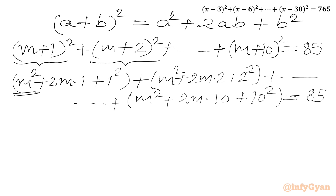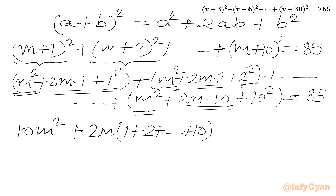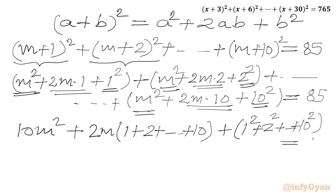Now I will collect m² terms — there are 10 m² terms in the LHS, so I will write 10m². Then the middle terms: I will take 2m in common, so in the bracket it will be 1 + 2 + 3 up to 10. Then the constant terms: 1² + 2² up to 10² equal to 85.